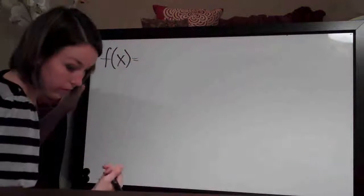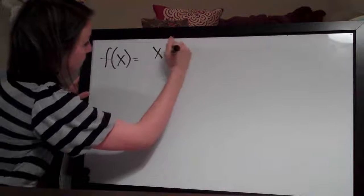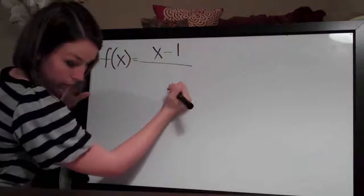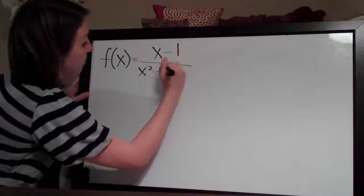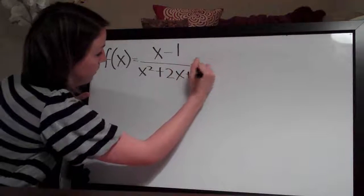The first one we're going to do tonight is the following: f(x) equals (x-1) over (x²+2x+1).